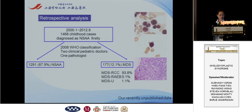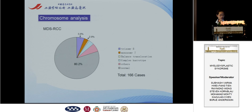Next, I will introduce our recently unpublished data. We reviewed 1,468 childhood cases first diagnosed as non-severe aplastic anemia in our hospital from 2000 to 2012. At last, 12.1% of patients were diagnosed with MDS, and most of them are MDS RCC patients. We checked the karyotype: 80% of patients had a normal karyotype, reinforcing the need for new technologies such as sequencing. Additionally, 5.6% of patients had trisomy 8, and 2.8% had monosomy 7 or 7Q-minus.